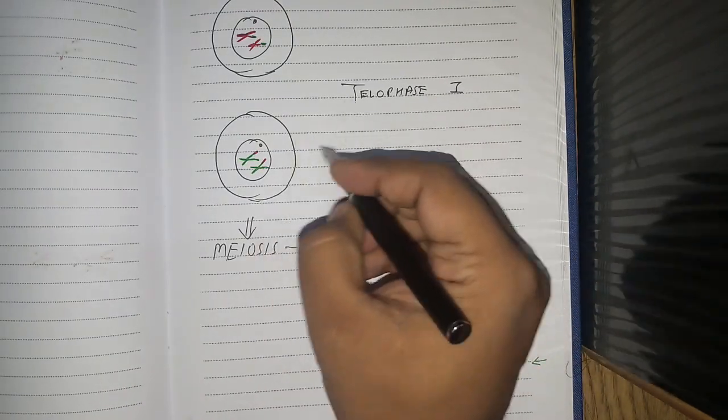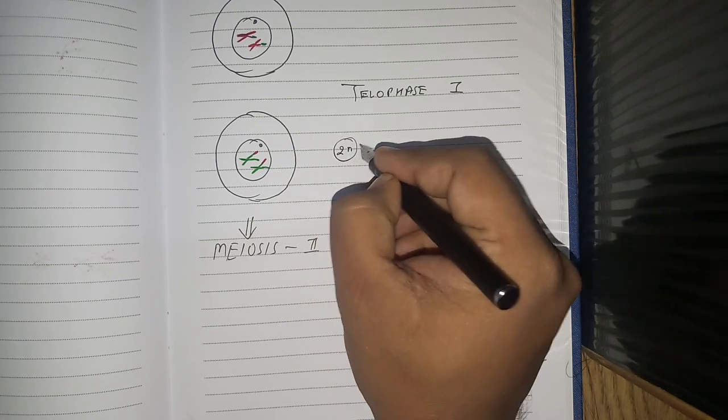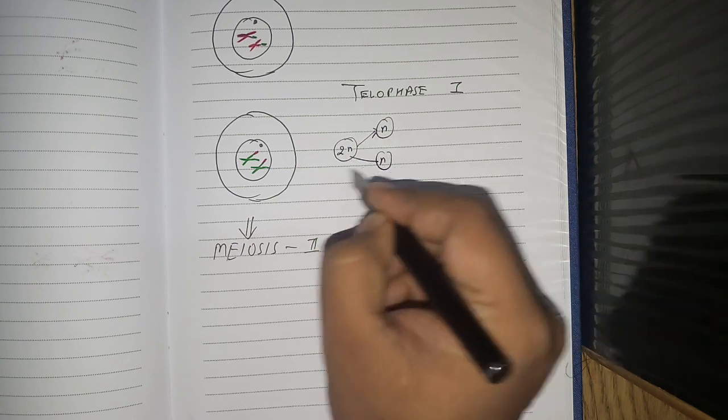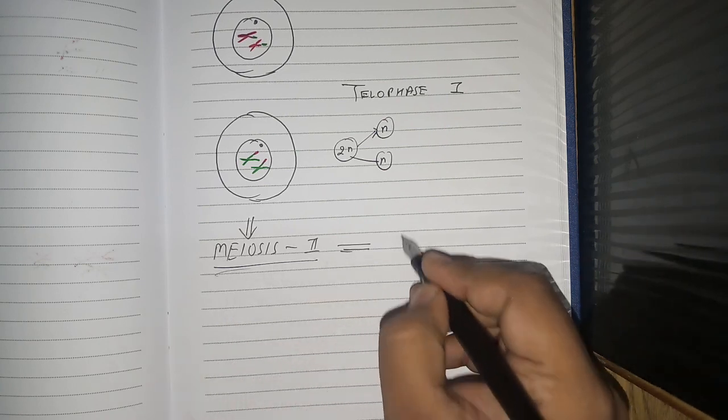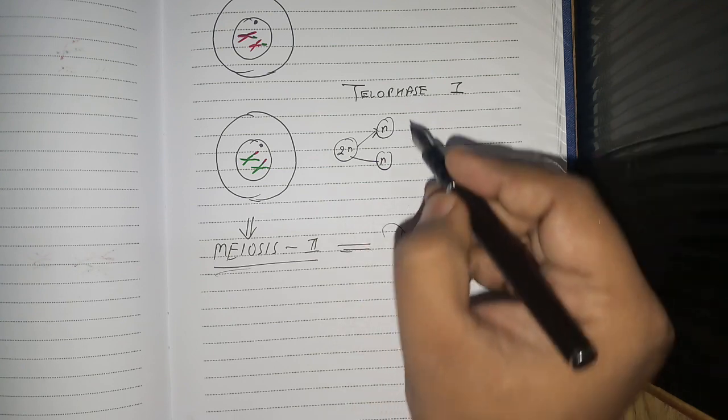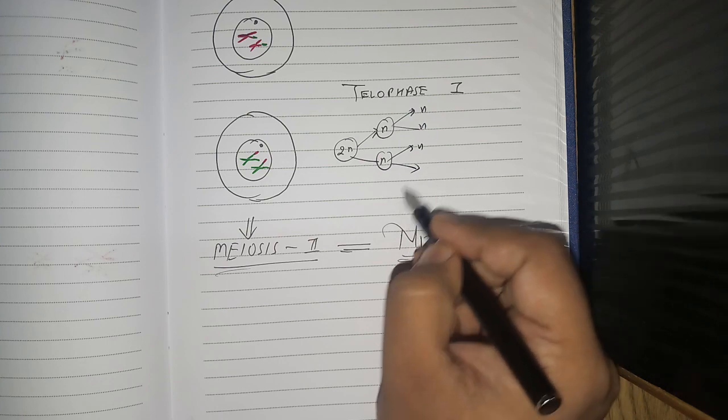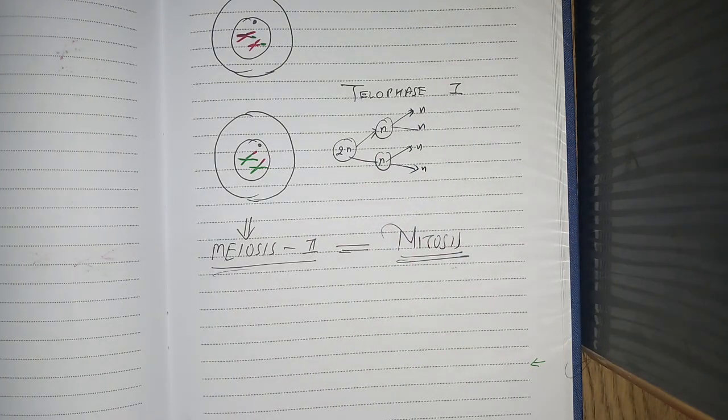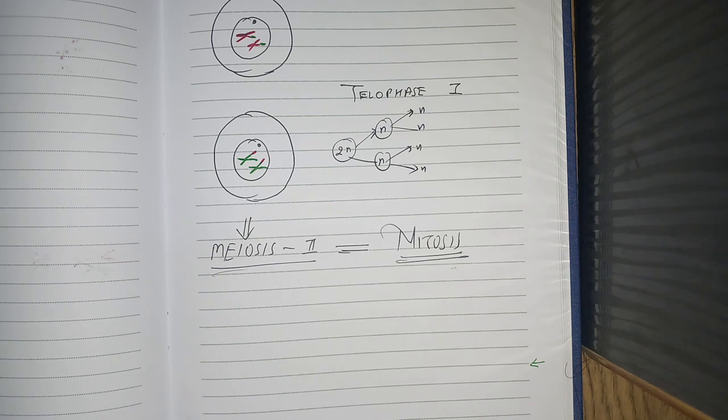Let's revise fast. We start with 2N, and we get N N till telophase 1. After that, what will happen is meiosis 2, and meiosis 2 is totally equal to mitosis. The same thing happened which we did in mitosis. From N N, we form gametes. Go through this once again till you get it. Do your best. We will see in the next video.